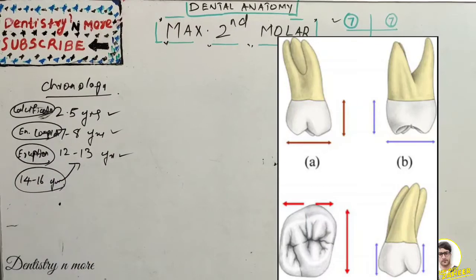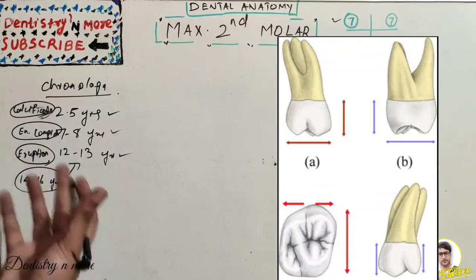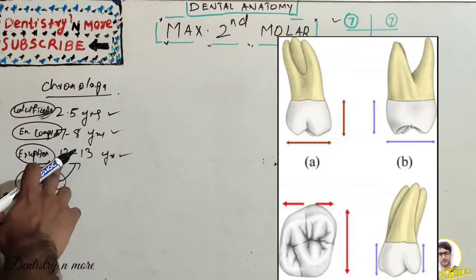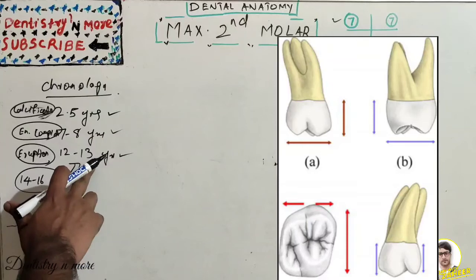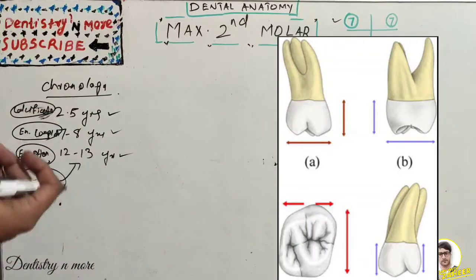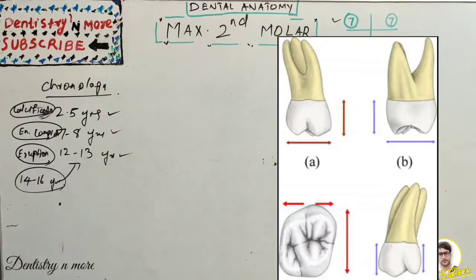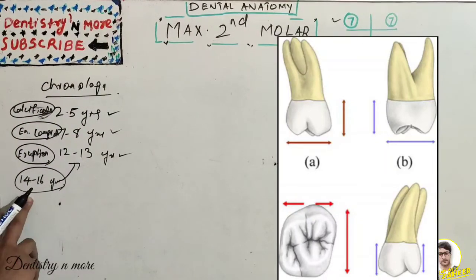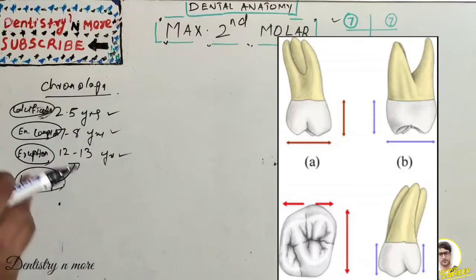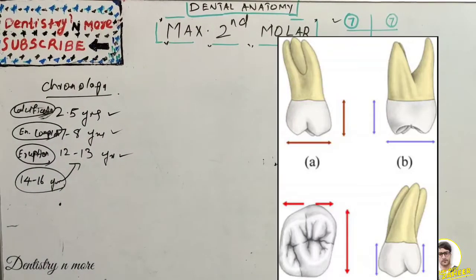You can note that there is continuous root completion even after eruption. Though the tooth erupts around 12 to 13 years, the root completion is not yet done — the apex won't be properly closed. Around 14 to 16 years the growth of the maxillary second molar will be complete, meaning the roots and apex closure are finalized.